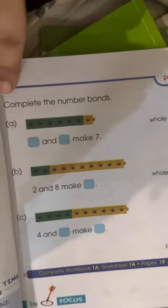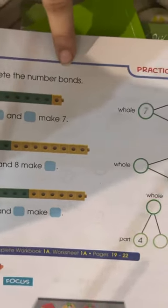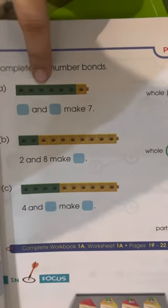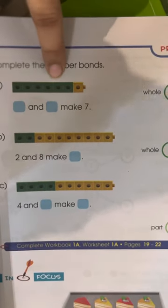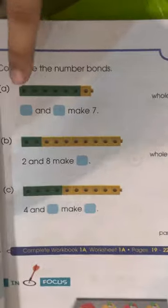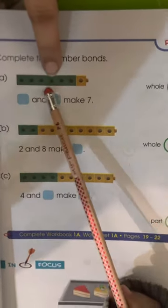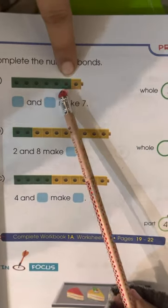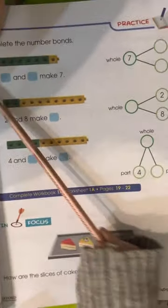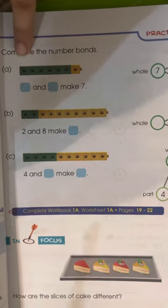Now look at here, complete the number bonds. How many green bonds are there and yellow? Count the green ones. How much? Green. How many green tiles are there? Count.